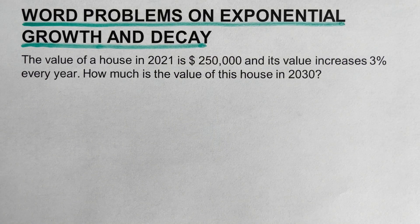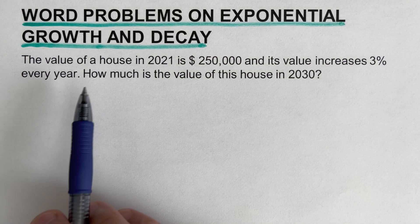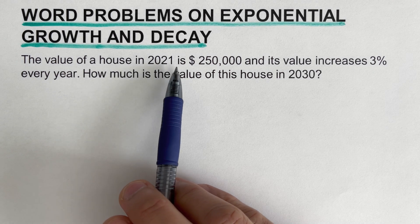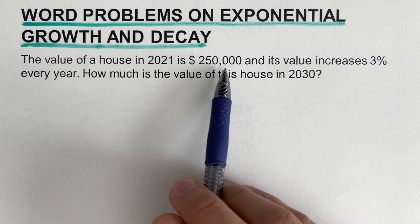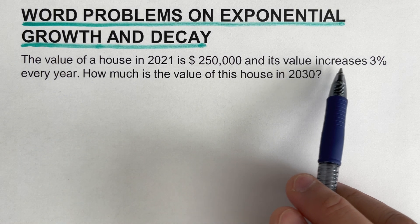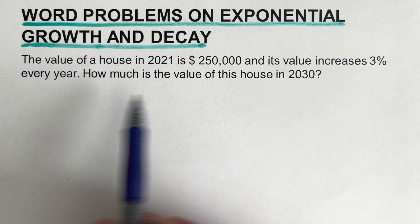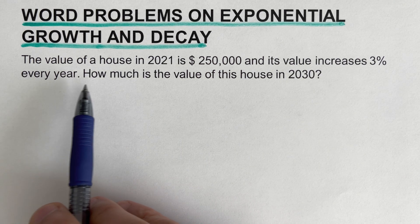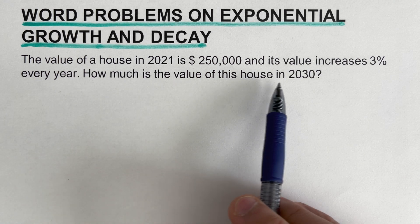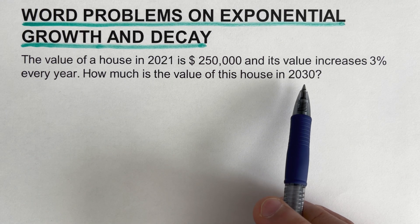Going back to the example we have right here: the value of a house in 2021 is $250,000, and its value increases 3% every year. How much is the value of this house in 2030?